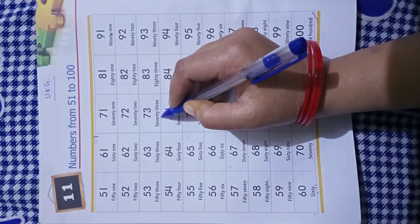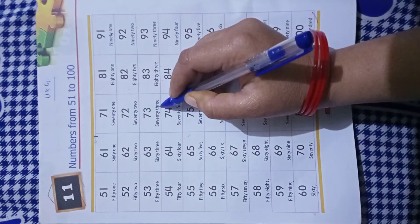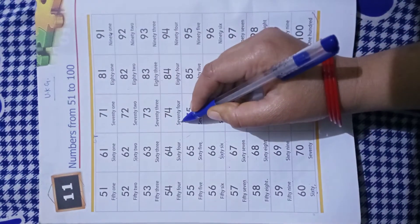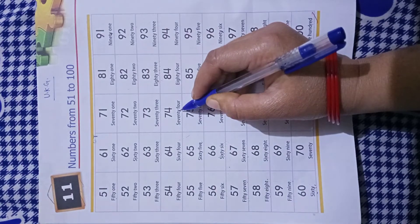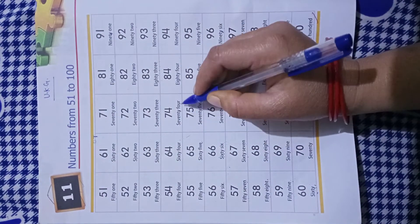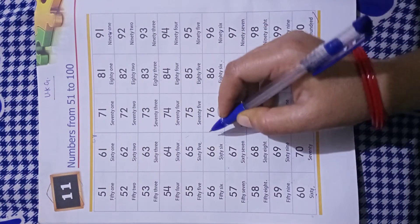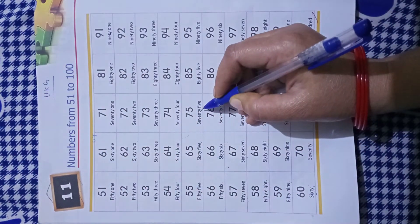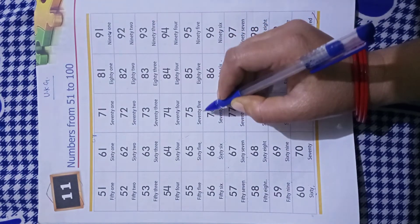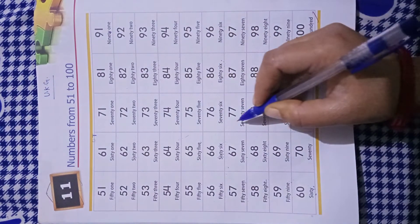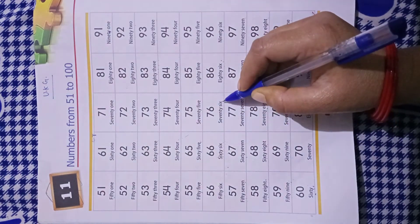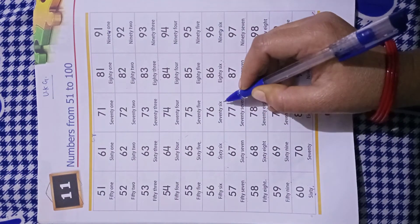SEVENTY-70 THREE-3-73, SEVENTY-70 FOUR-4-74, SEVENTY-70 FIVE-5-75, SEVENTY-70 SIX-6-76.